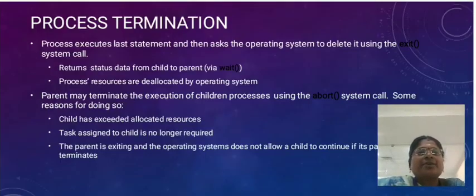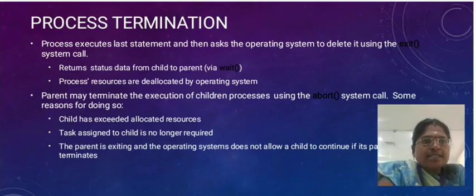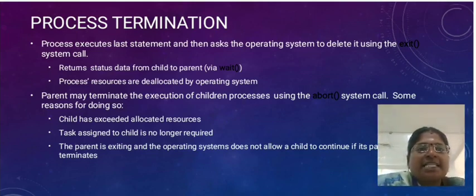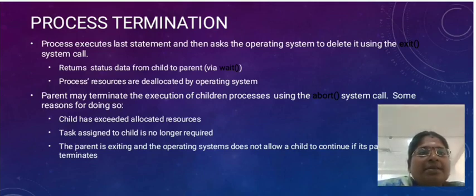A process executes its last statement and then asks the operating system to delete it using a system call. Status data is returned from the child to the parent, and process resources are deallocated by the operating system. A parent may terminate the execution of a child process using the abort system call if the child has exited, allocated resources are exceeded, or the task assigned to the child is no longer required.